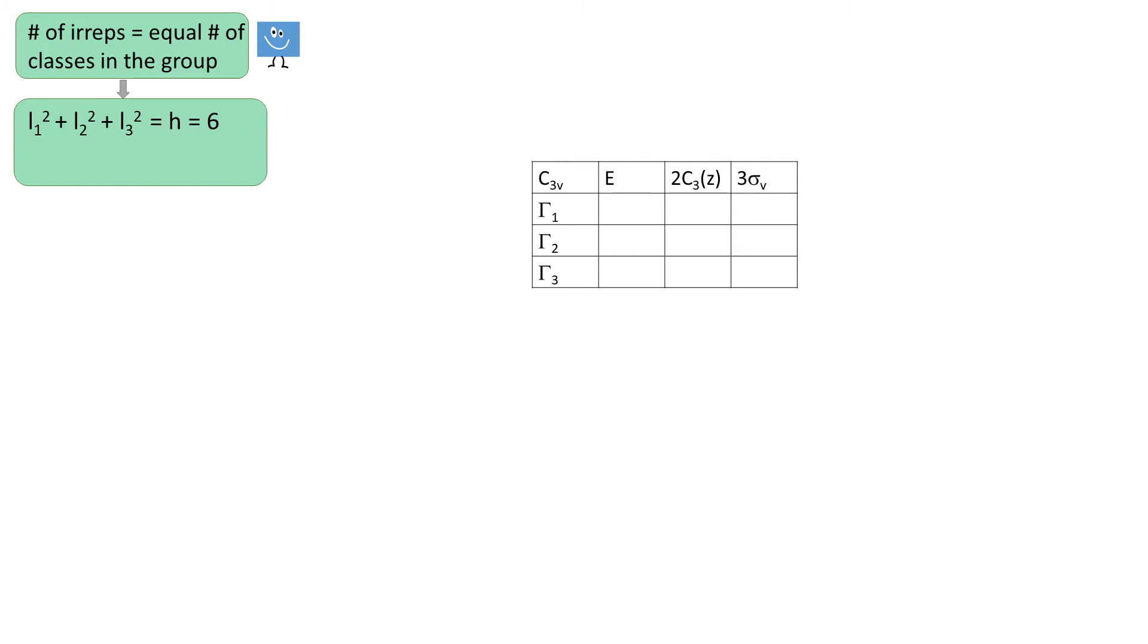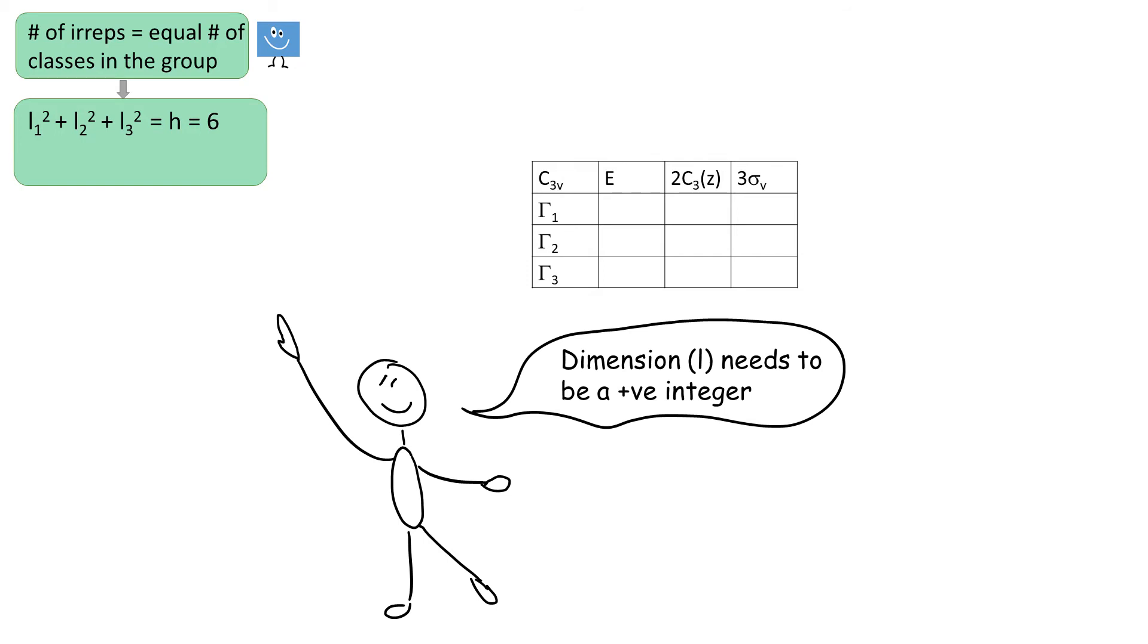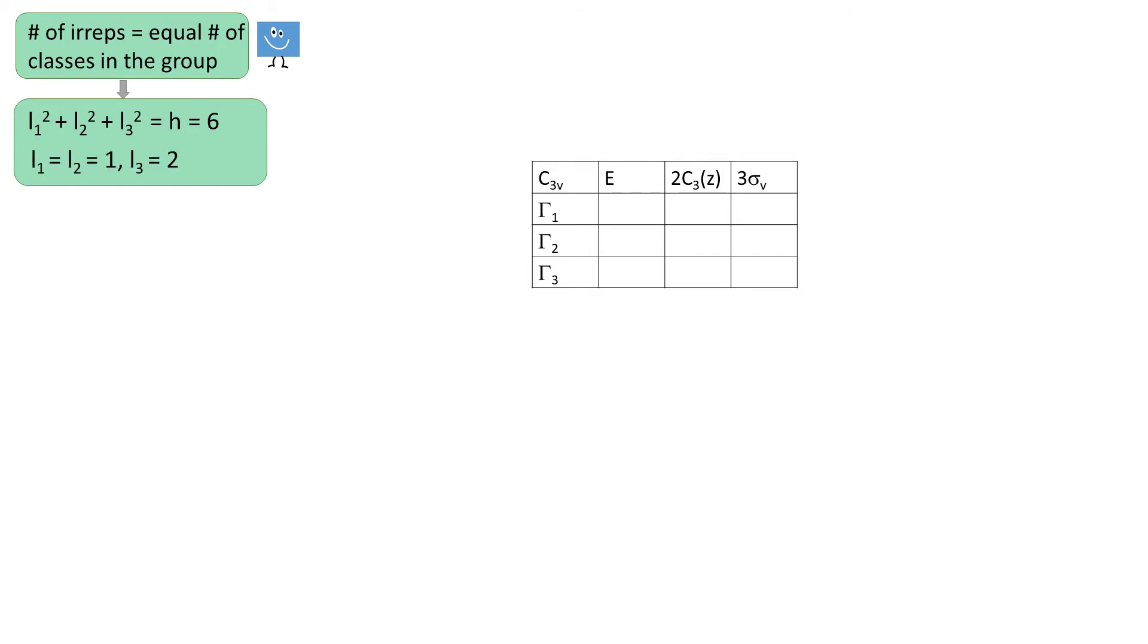Our next example is C3V. We have 3 classes again, so that means there are 3 EREPs. The sum of squares of the dimensions of the EREPs must equal to the number of operations in a group, which is 6. We remember that Ls have to be positive integers, therefore the only solution is 1, 1, 2. That is, we have 2 1-dimensional EREPs and 1 2-dimensional EREP.